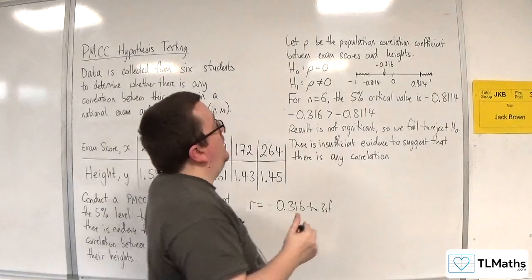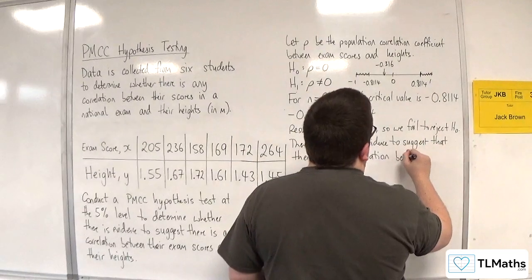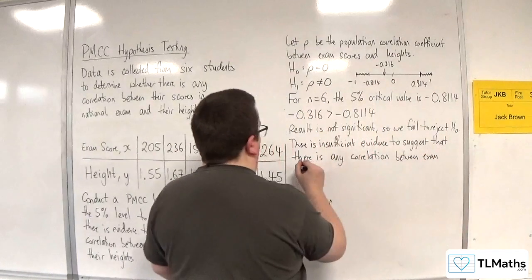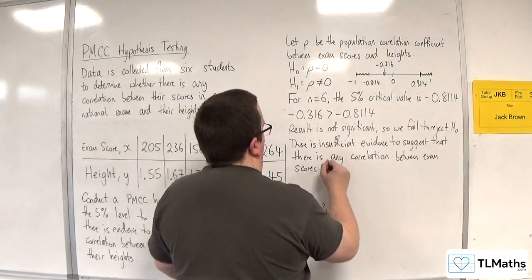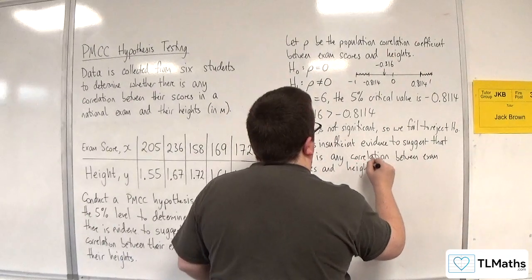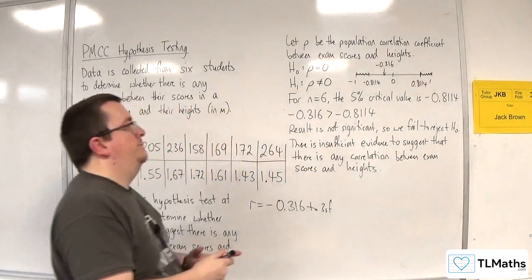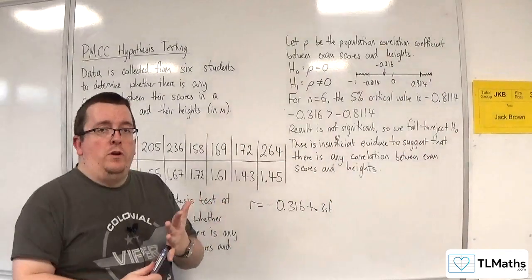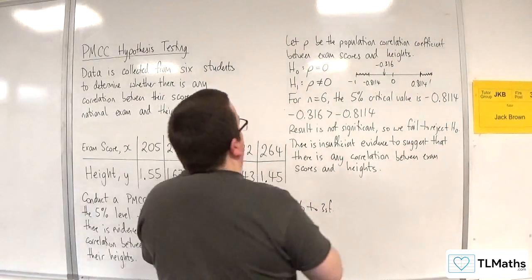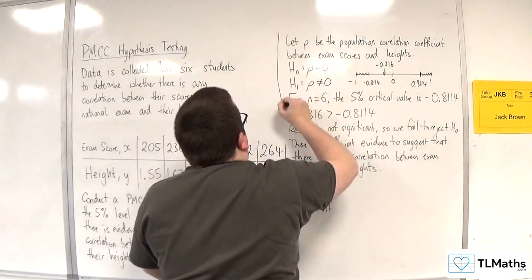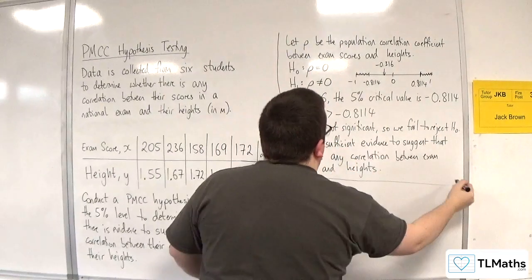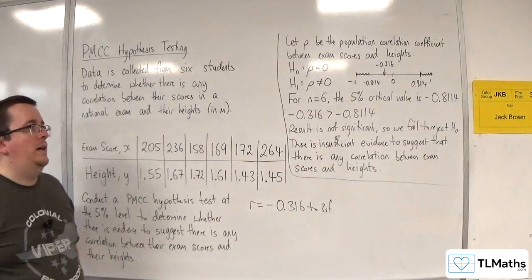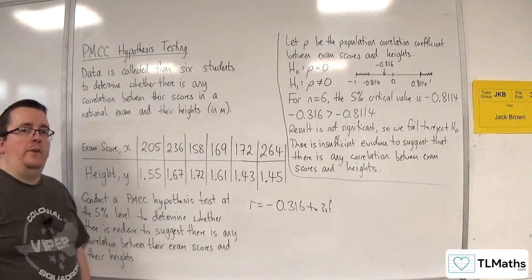If you see any correlation or some correlation, you know that that's talking about a two-tail test. And that is what we need to write down in order to answer the question.